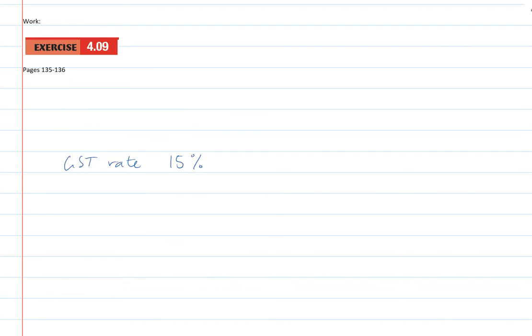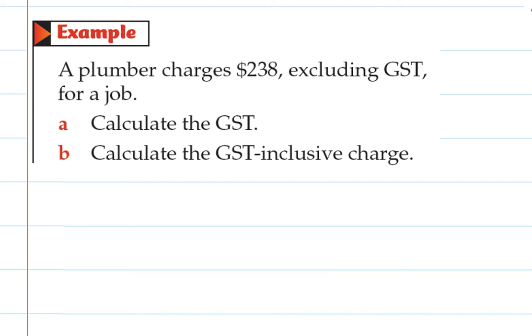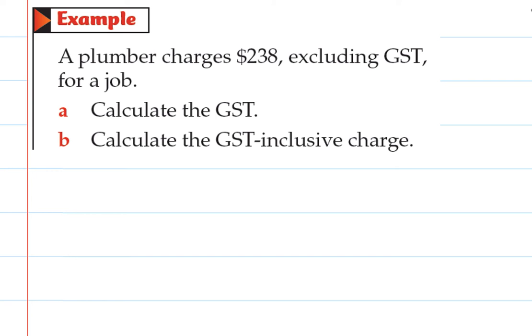In New Zealand, the GST rate is 15%. It hasn't always been 15%. They changed it maybe 5 or 10 years ago, and it could change again, but at the moment it's 15%. So GST is just a tax that's put on top of anything that you buy, and if you're in a business you have to put GST on anything that you sell.